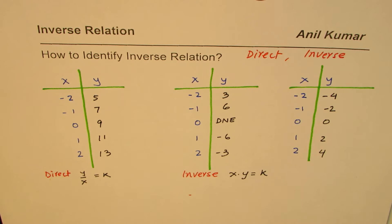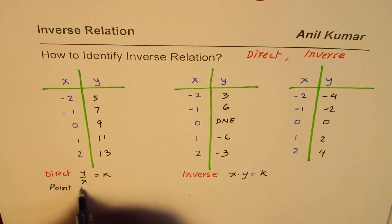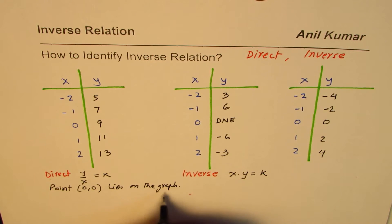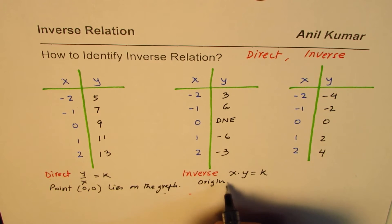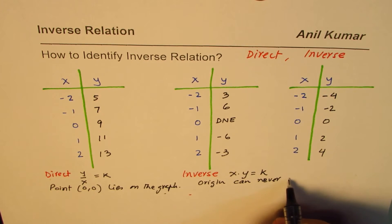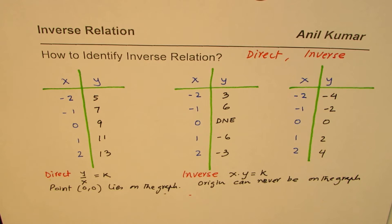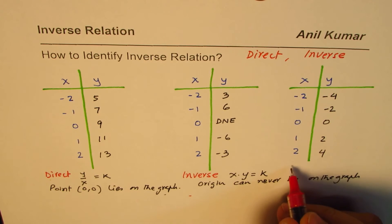Of course you cannot divide by zero. For a direct relation, the point (0, 0) lies on the graph. For an inverse relation, the origin can never be on the graph. So if a table includes the point (0, 0), we know very clearly that it cannot be an inverse relation — we can immediately rule those out as not inverse.